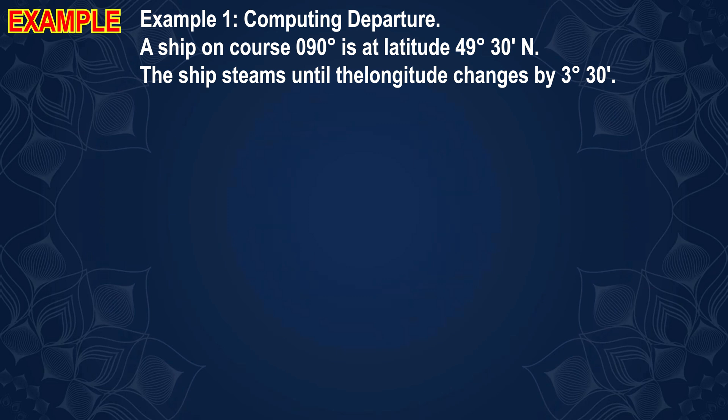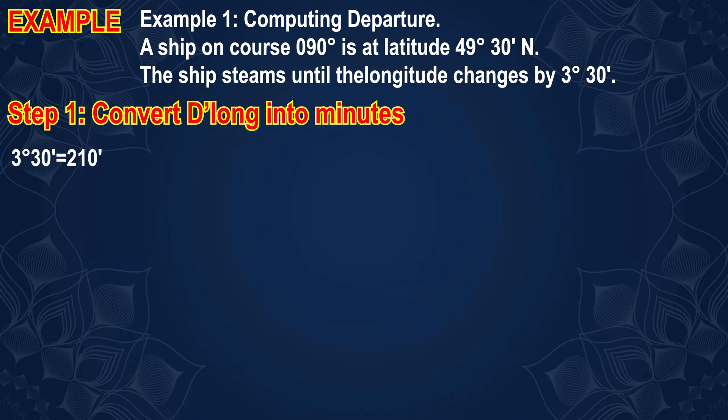Step 1: Convert the difference in longitude into minutes. 3 degrees 30 minutes equals 210 minutes of longitude.